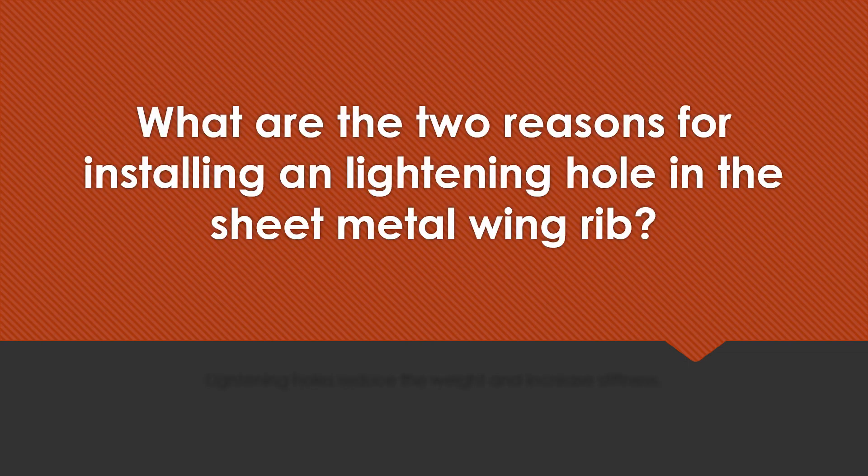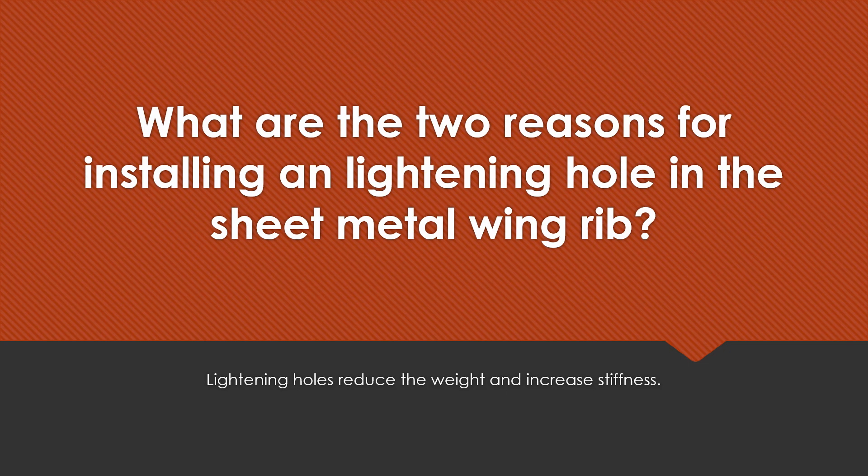What are the two reasons for installing a lightning hole in a sheet metal wing rib? Lightning holes reduce the weight and increase the stiffness of the metal.